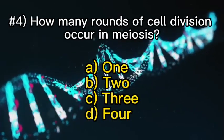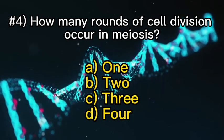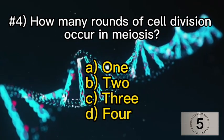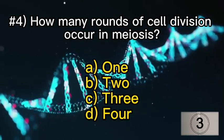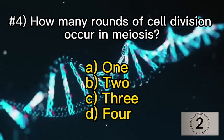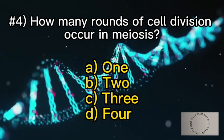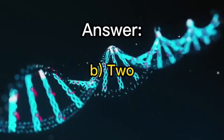Number four: how many rounds of cell division occur in meiosis? B — two.